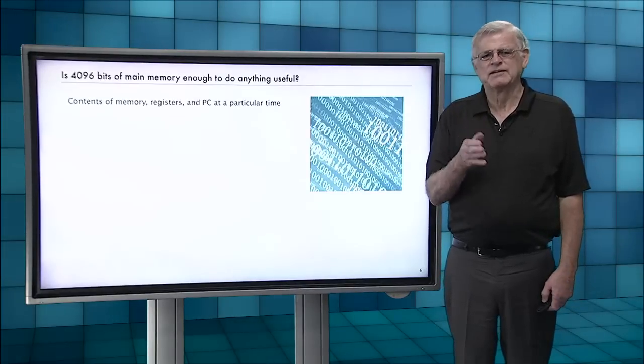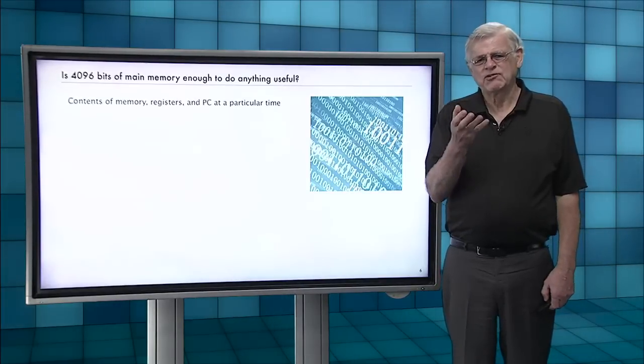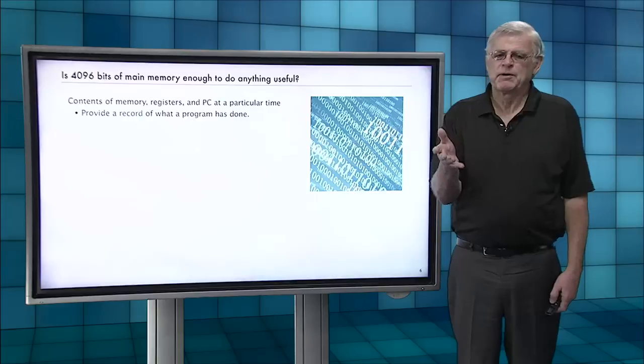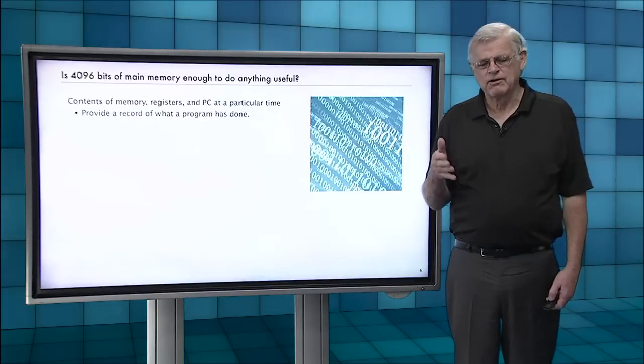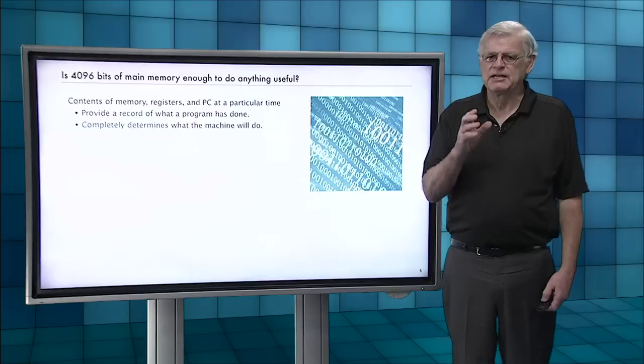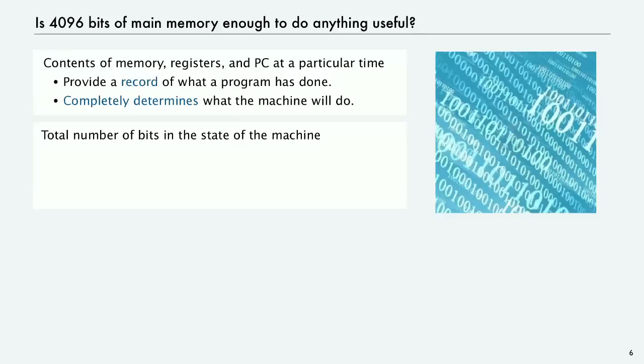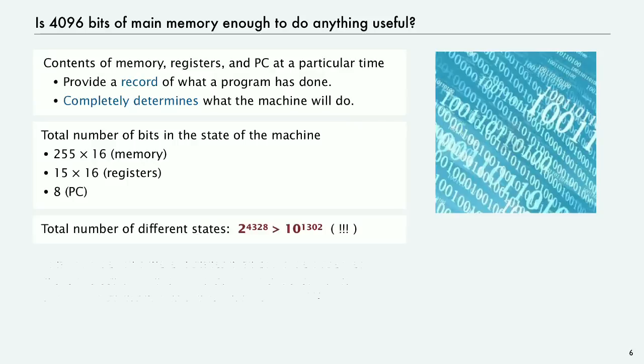So let's look at this even in more detail. So 4,000 bits of memory. If you consider the contents of the memory registers in PC at a particular time, we talked about this at the beginning. It provides a complete record of what a program has done, and it also completely determines what the machine will do next. It was a deterministic machine based on just these bits of memory. And if we count up the total number of bits involved, well, actually, since we used the last location for standard input, there's 255 times 16 bits for memory. Since register zero is always zero, there's 15 times 16 bits for the register. And then there's the PC.